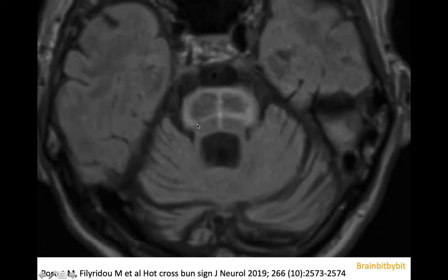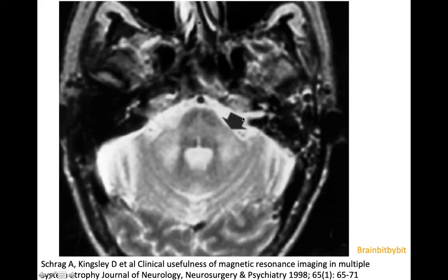The hyperintense fibers in the pons are the transverse pontine fibers and the fibers going from anterior to posterior, giving it the appearance of a hot cross bun. That is easy to see. Sometimes there's also hyperintensity of the middle cerebellar peduncle, but unfortunately this is not the case in the majority of patients.